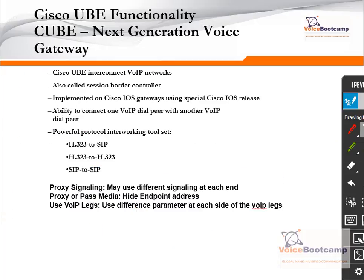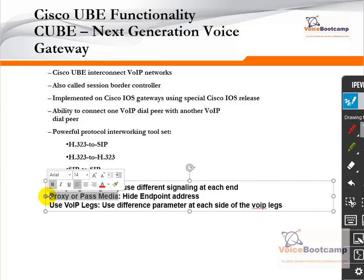The next-generation gateway is called CUBE — Cisco Unified Border Element — which is an IOS feature of a router that makes it a Session Border Controller. It is implemented on an IOS gateway using a special IOS release. It has the ability to connect one VoIP dial plan to another, and allows protocol interworking between H.323 and SIP, H.323 to H.323, SIP to H.323, or SIP to SIP. If two endpoints cannot speak the same signaling protocol, you must have a CUBE in between — one side will be H.323, the other side SIP, and CUBE performs the protocol translation. In addition to protocol translation, CUBE can also do media proxy, meaning RTP traffic goes through the CUBE for additional security.